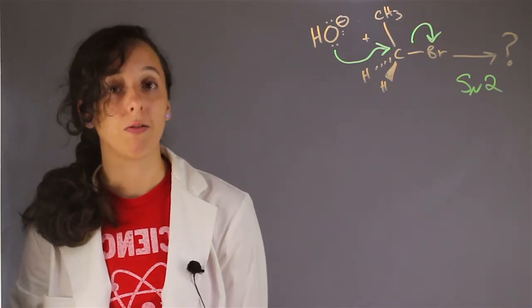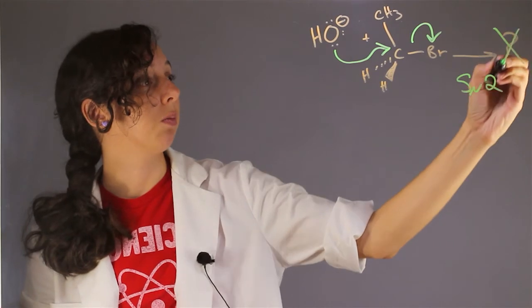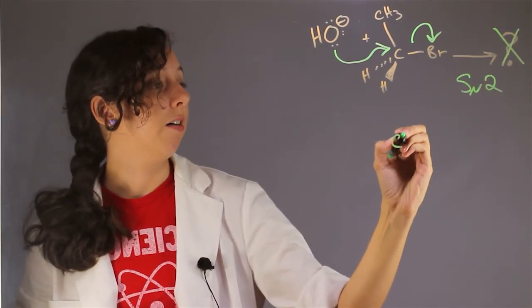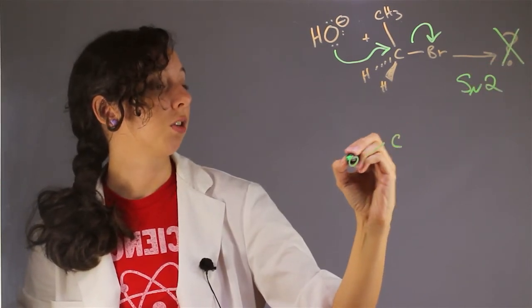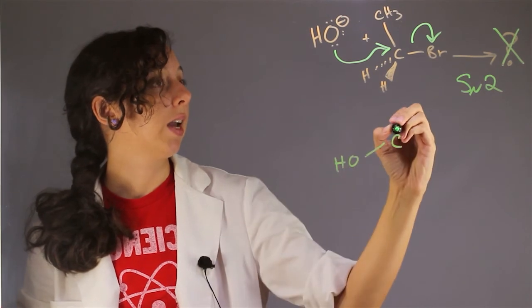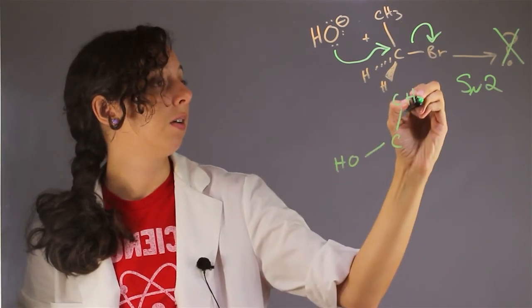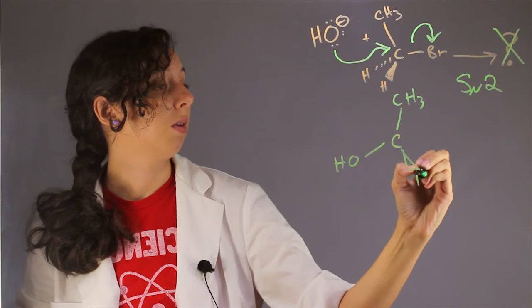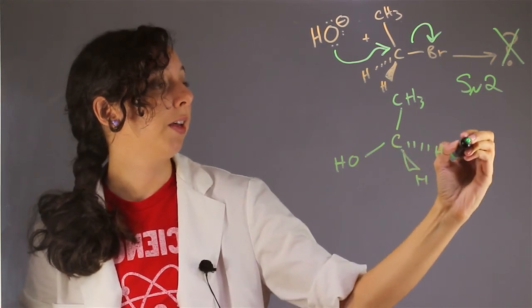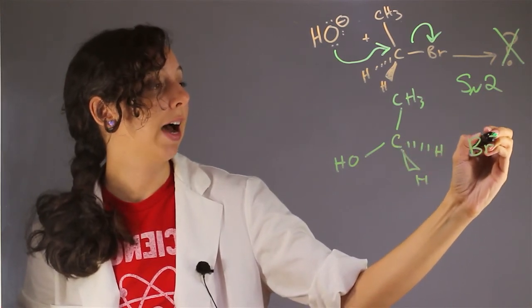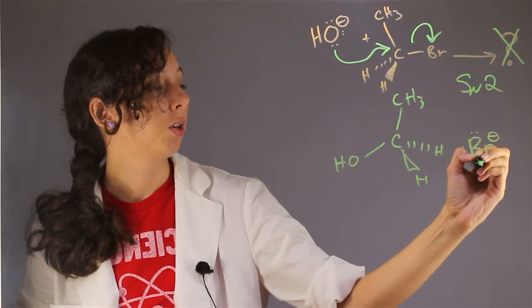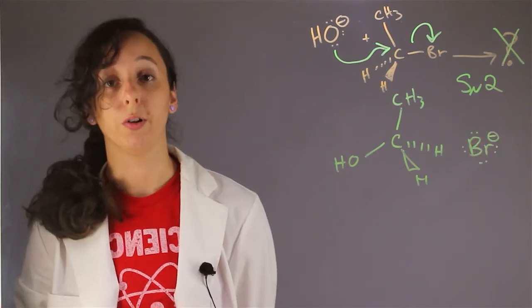And then I'm just going to draw what we got. So we don't have a question mark anymore. We know that we have our oxygen group as attacked. We have our methyl group, and we have our two hydrogens. And then over here hanging out, now we have a negatively charged bromine with four lone pairs.